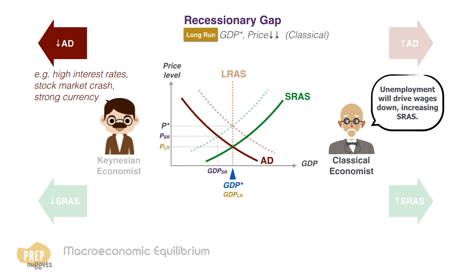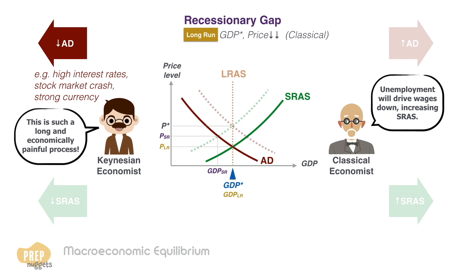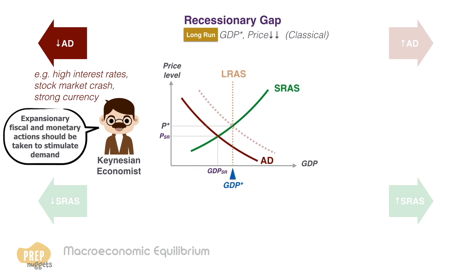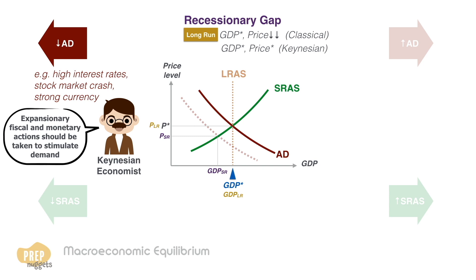Keynesian economists, on the other hand, feel that this is a long and economically painful process. They feel that action should be taken to stimulate aggregate demand through expansionary fiscal and monetary policy. Such actions can help to return real GDP to its full employment level and restore prices back to the level before the recession.